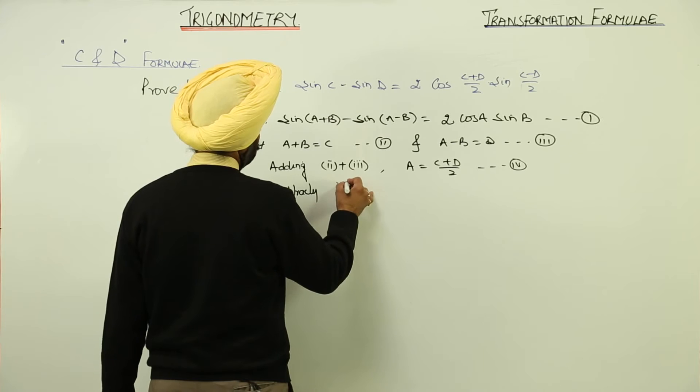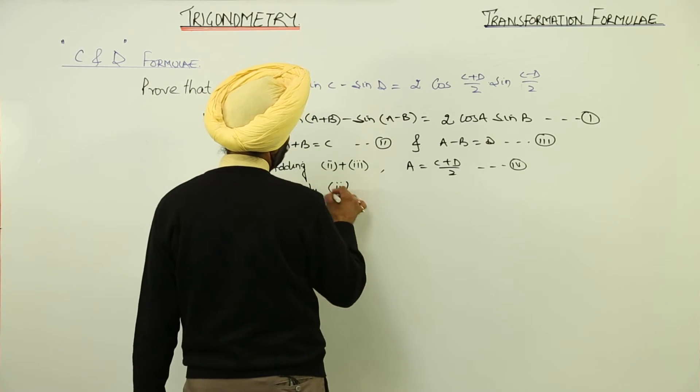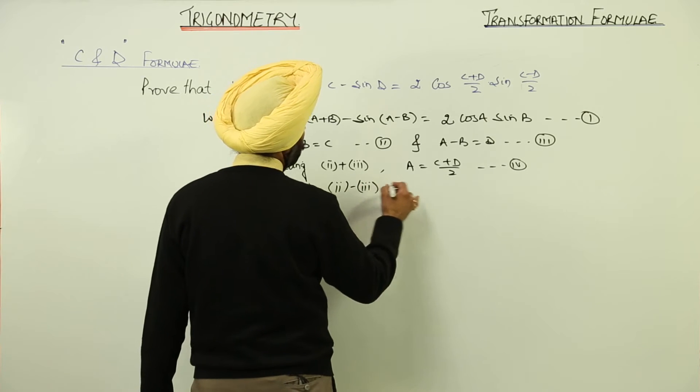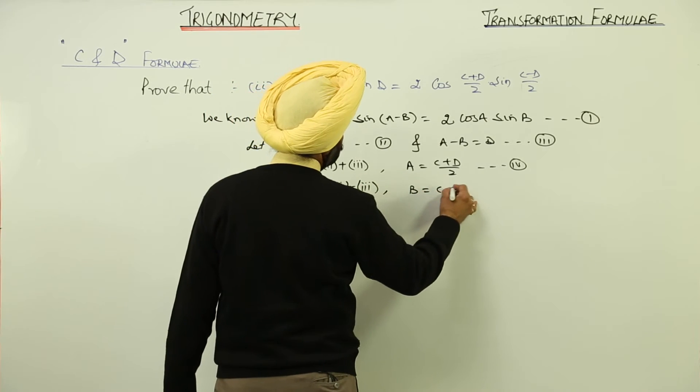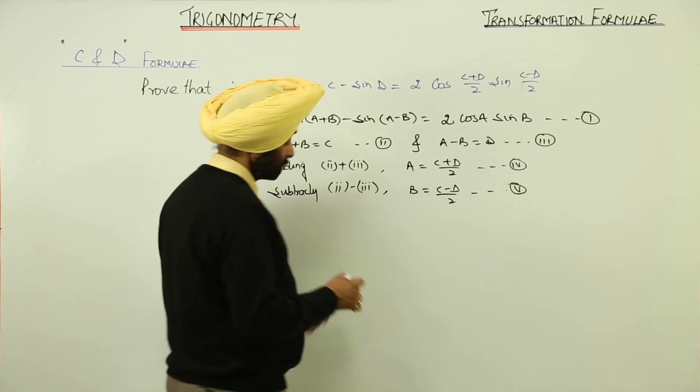Then subtracting, B = (C-D)/2, equation 5. Now,